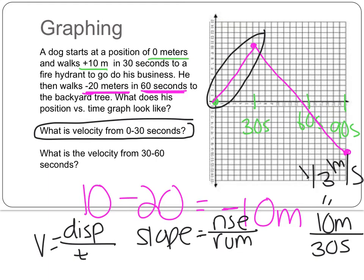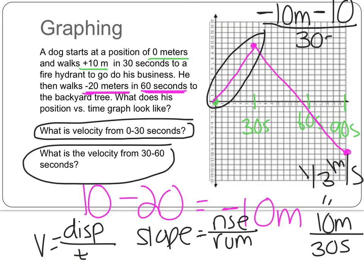Let's look at this for our second problem. We now ask, what is the velocity from 30 to 60 seconds? So before we begin, reminder, we are finding the slope of this line, which is also our velocity, our displacement over our time. So our ending point is negative 10 meters. And we're subtracting that from our initial, which is 10 meters. And that's over a total of 30 seconds. So we'll have negative 20 meters over 30 seconds. So our final answer will be negative two-thirds meters per second.